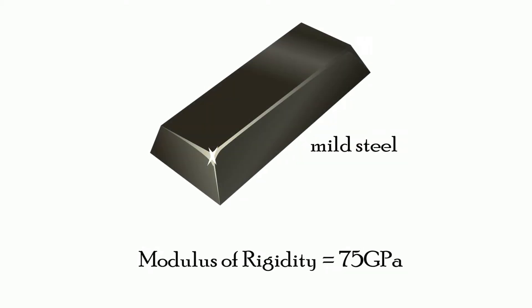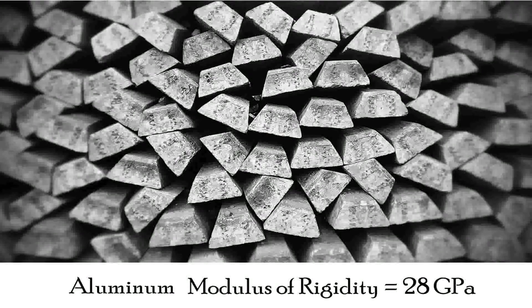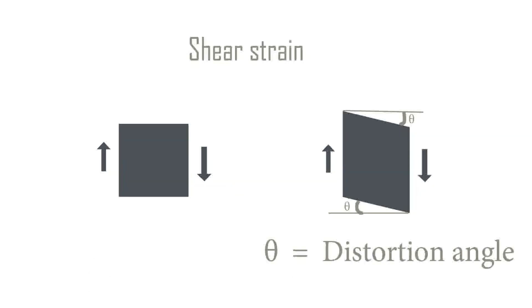As an example, steel has a modulus of rigidity of 75 GPa and aluminum has 28 GPa. If we apply the same amount of shear stress to these materials, we can get different strain values. Aluminum can distort more easily than steel in shear stress because it has a lower modulus of rigidity.